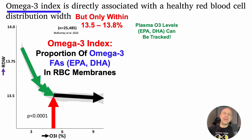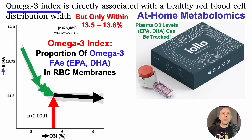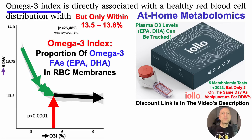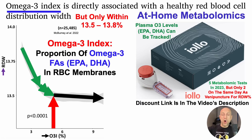In contrast to measuring the omega-3 index in red blood cell membranes, plasma levels of EPA and DHA can also be tracked. I've been doing that using IOLO's at-home metabolomics kit — there's a discount link in the video description. I measured five times in 2023, but unfortunately only two of those tests included venipuncture, giving me RDW values to correlate with plasma omega-3 levels. I plan on testing at least five more times in 2024, measuring RDW on the same day, to evaluate whether plasma EPA and DHA correlate with RDW percentage.